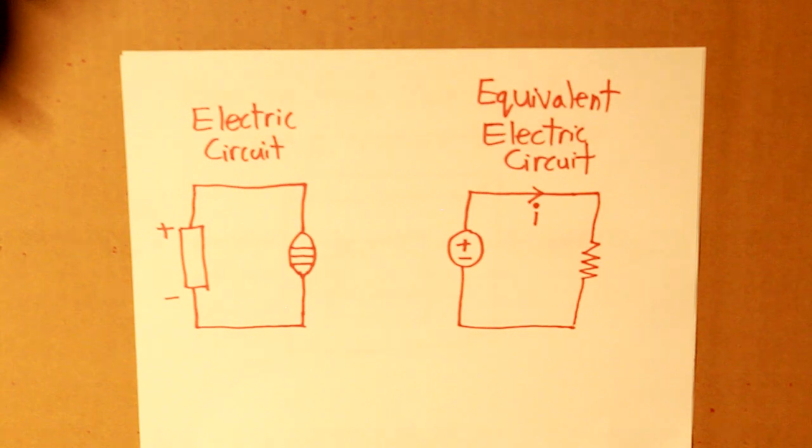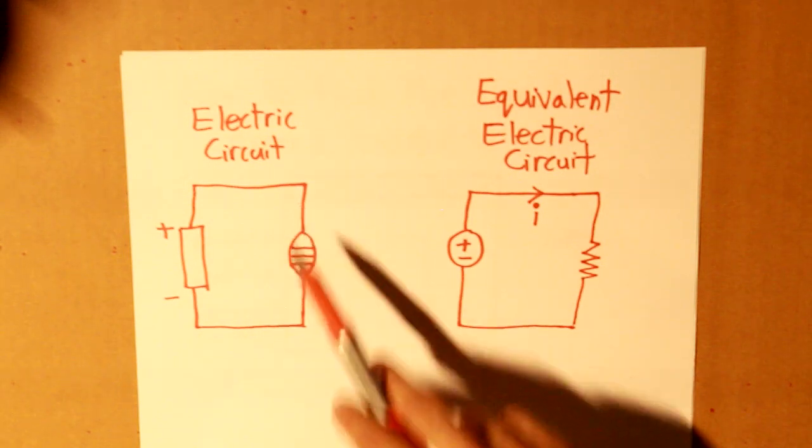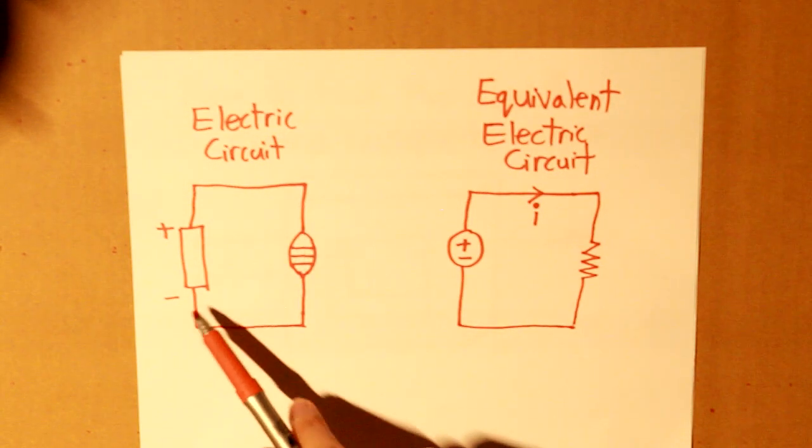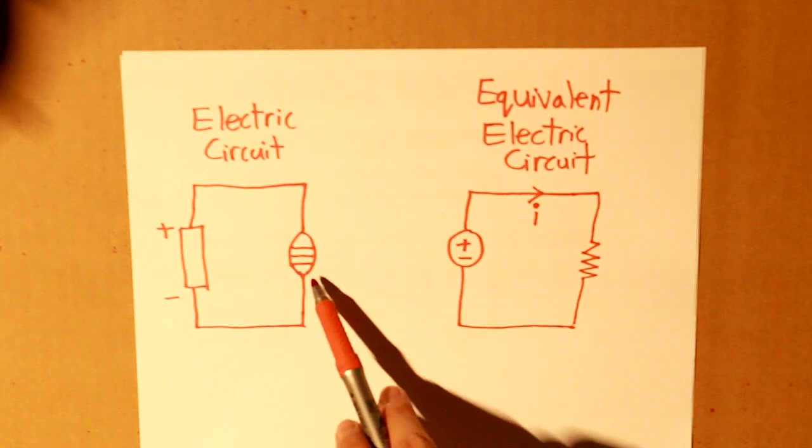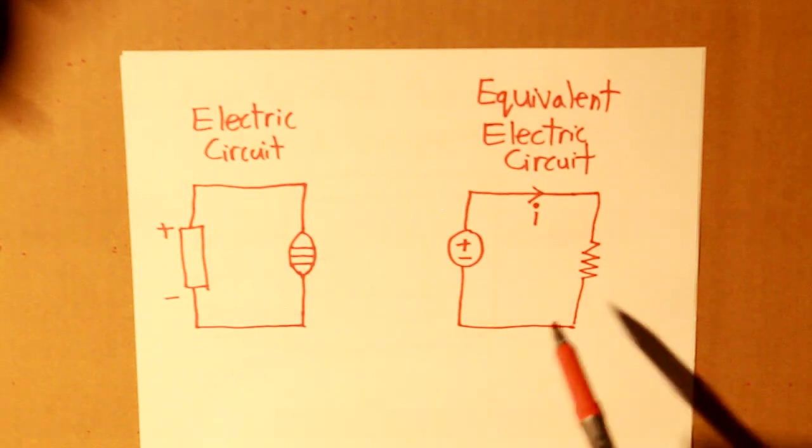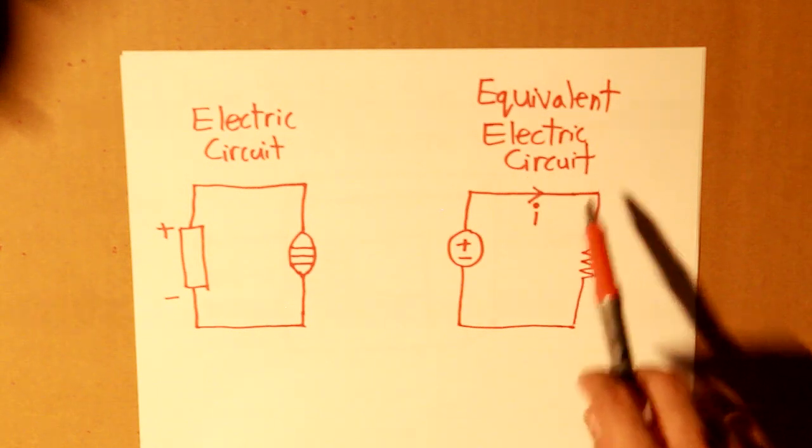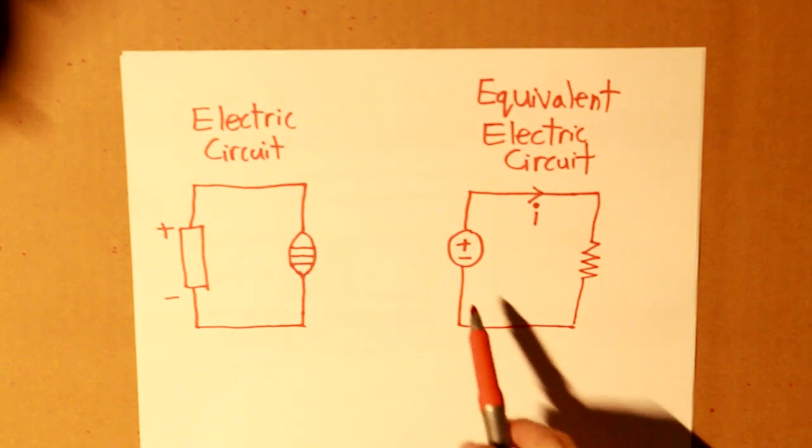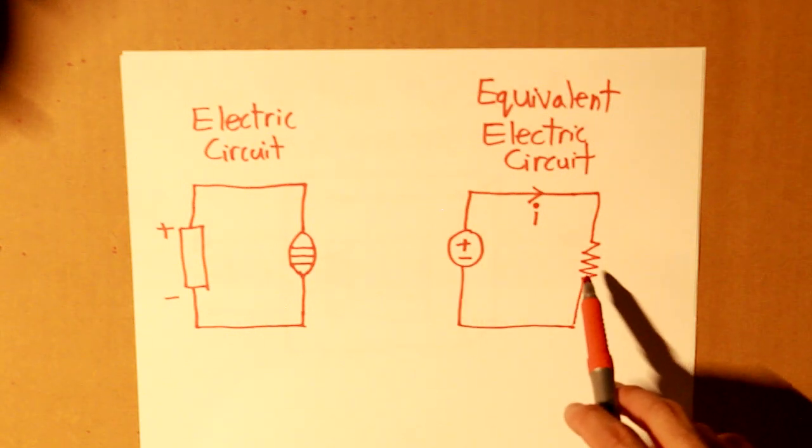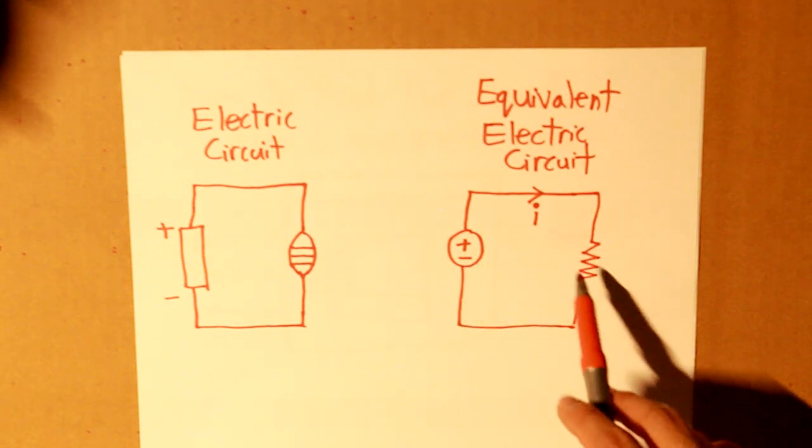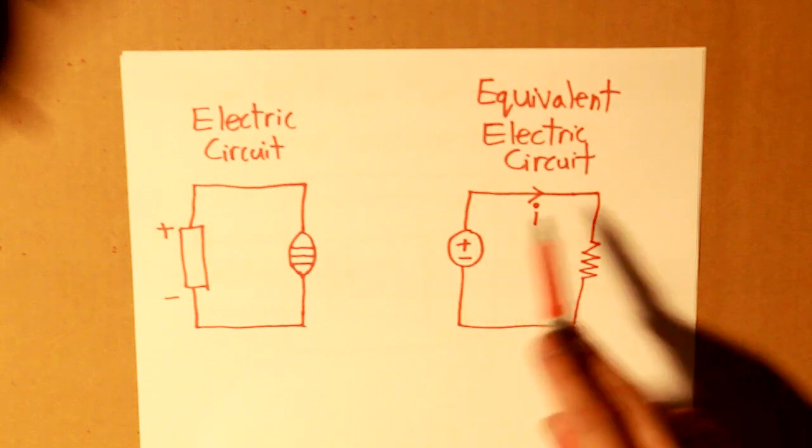Well, the electric circuit. So we have this electric circuit right here where we have a battery and a resistor pin connected to it. And when we convert it to our equivalent electric circuit, this is how it will look like, where we have that voltage source and the resistor symbol and also we have a current flowing through.